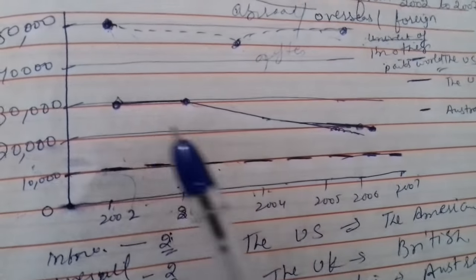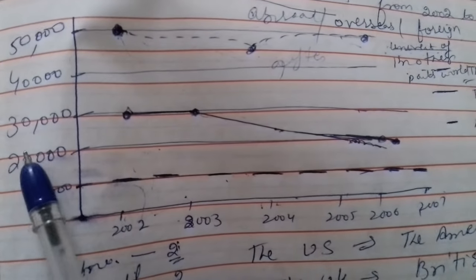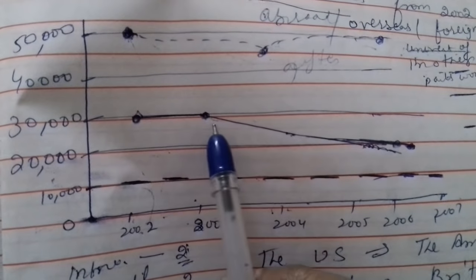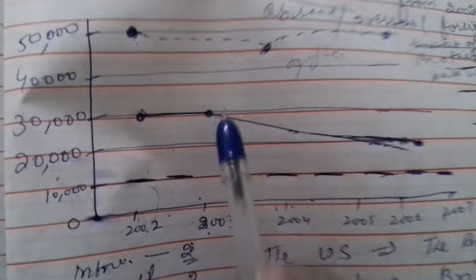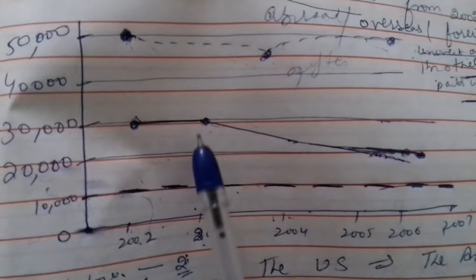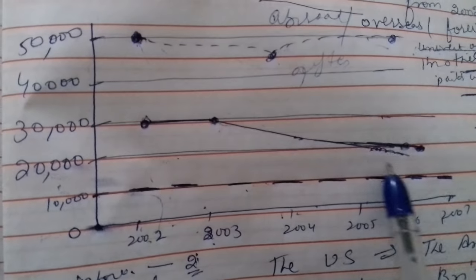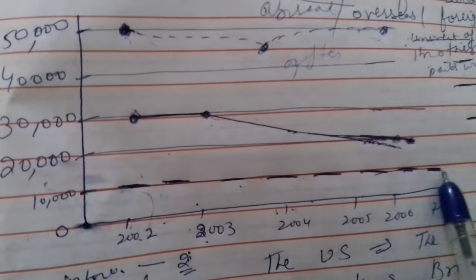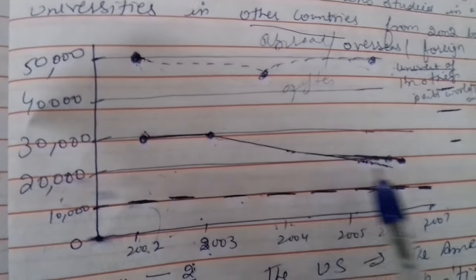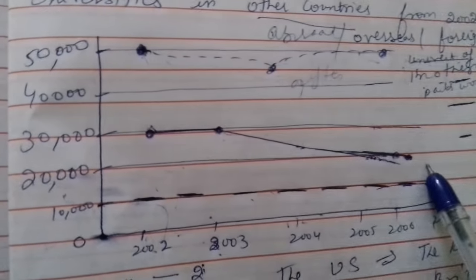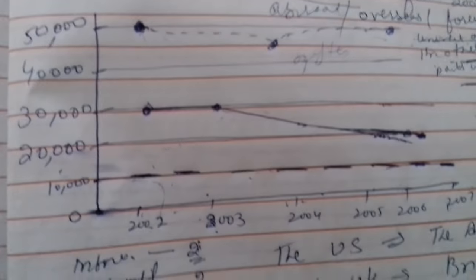Then, in case of UK students. Number of students was 30,000 in 2002, which remained same in the next year. In 2003, you can write 'next year' instead of the road. But after 2003, it declined gradually. It decreased gradually, it reduced gradually, moderately, sharply, and reached 20,000 in 2007.